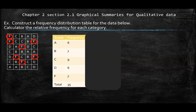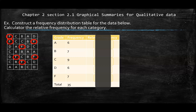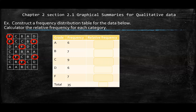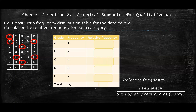The other thing is relative frequency — you've probably encountered this before. The relative frequency is basically you take the frequency divided by the total frequency. So you take the frequency of A, which is 6, divided by the total frequency, which is 35, to give you 0.17.